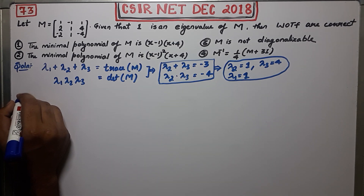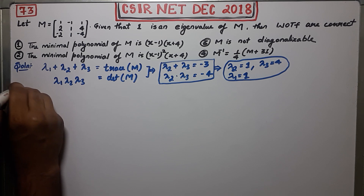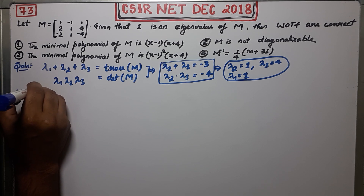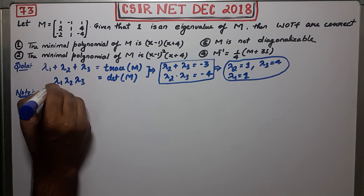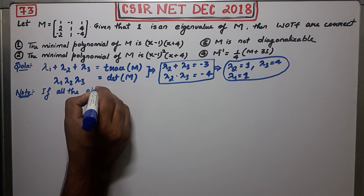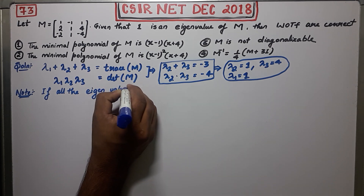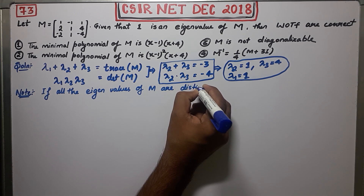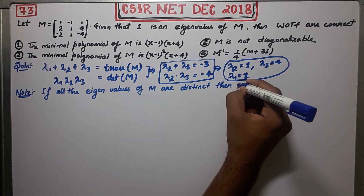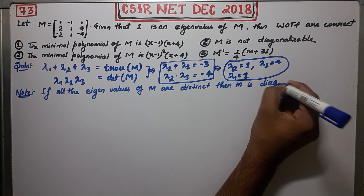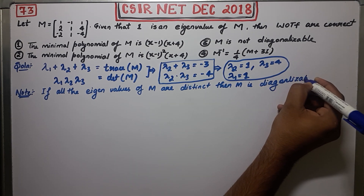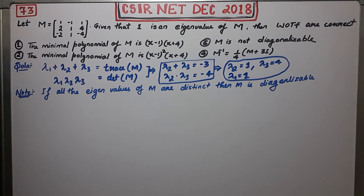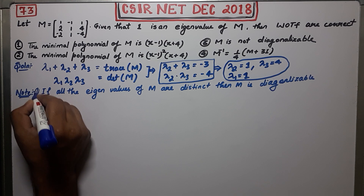Before trying option three, remember these two notes. The first note says: if all the eigenvalues of M are distinct, then M is diagonalizable. In the given question you have two repeated eigenvalues, so this note will not work here. You have to check diagonalizability with another method.